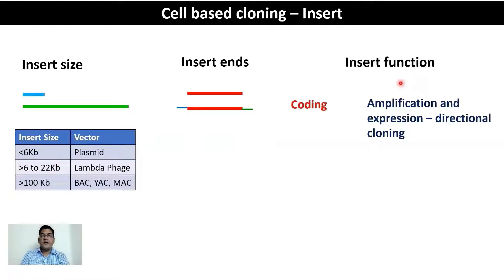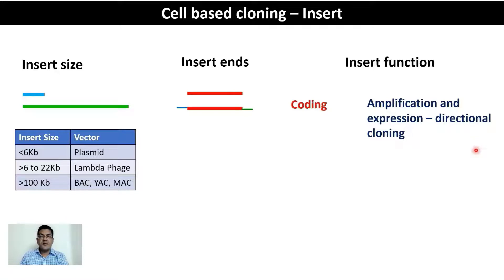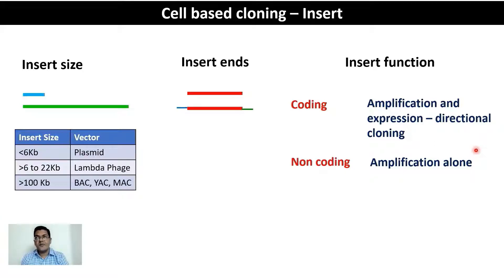There can also be variability in insert function. If the insert is part of a coding region of the genome, it is capable of expressing a protein, and in such cases you must use expression vectors rather than normal cloning vectors. You must also ensure directional cloning so that the promoter and terminator sequences are in the correct orientation relative to the insert. If the insert is non-coding, the only purpose may be to amplify the DNA, most commonly done for sequencing experiments.